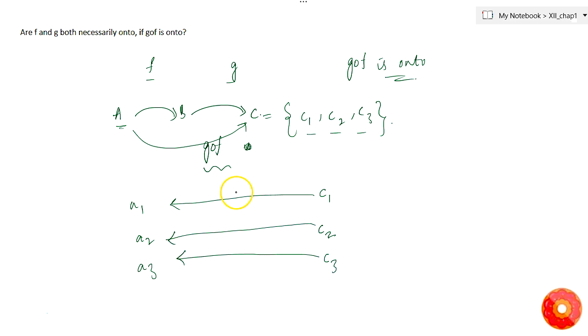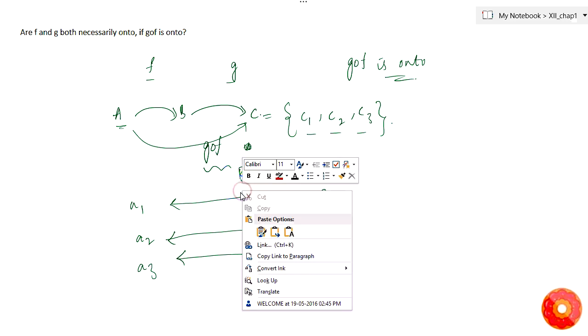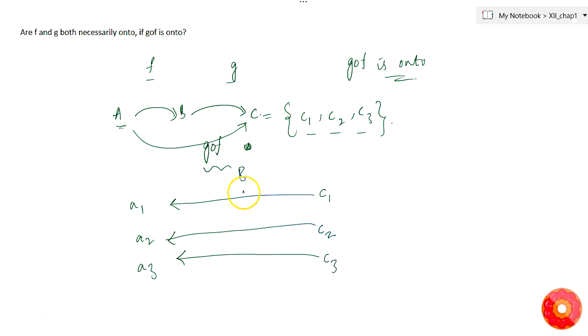In between there is b. So let's say there is b1 corresponding to this, and there is b2 corresponding to this and b3 corresponding to this.